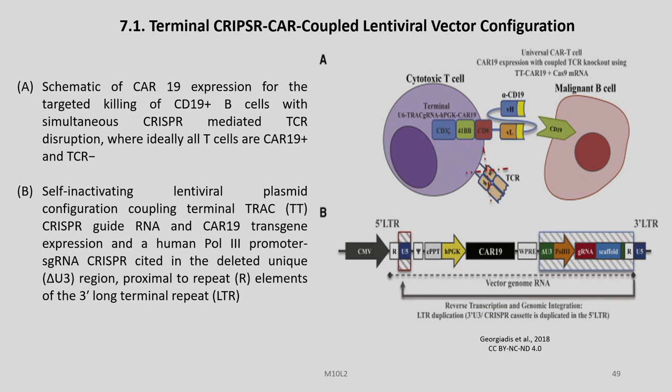Schematic of CAR19 expression for the targeted killing of CD19-positive B-cells with simultaneous CRISPR-mediated TCR disruption, where ideally all T-cells are CAR19-positive and TCR-negative, is shown in figure A. In figure B, we can see the self-inactivating lentiviral plasmid configuration coupling terminal TRAC CRISPR guide RNA and CAR19 transgenic expression and a human pol III promoter as the RNA CRISPR cassette in the deleted unique region proximal to repeat elements of the 3-prime long terminal repeat. This figure is obtained from Georgiadis et al. 2018.